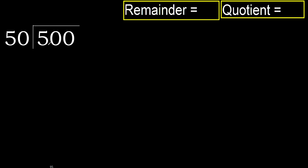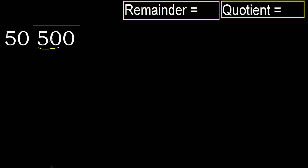500 divided by 50. 5 is less, therefore next. 50 is not less, therefore with 50.